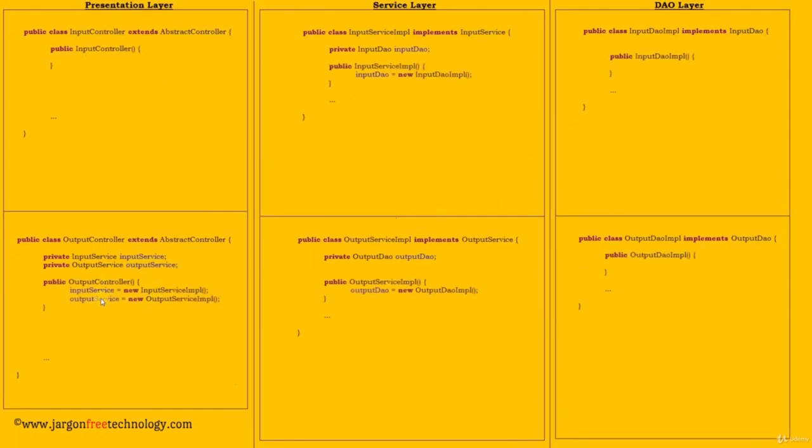Here are the classes. Here we create instances of service classes using the new operator, and here we create instances of InputDAOImpl and OutputDAOImpl using the new operator. Now, to create an instance of InputController and an instance of OutputController, all we have to do is declare a bean tag for each of the classes in the configuration file and specify the class name. If the class implements an interface, we should still specify only the class name and not the interface name. When the container reads this configuration file, it will create an instance of the specified classes.